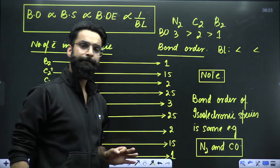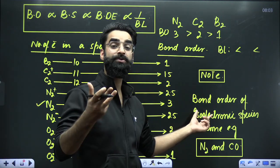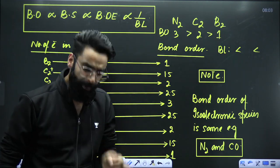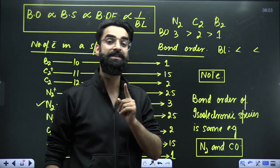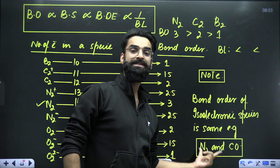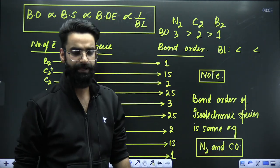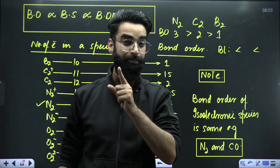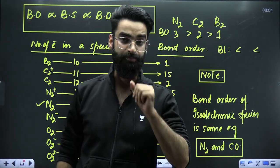One more important thing to remember: whenever you see isoelectronic species — which are species having the same number of electrons — they always have the same bond order. For example, N2 and CO are both 14-electron species, so both will have a bond order of 3. This is one quick hack through which you can solve bond order, bond strength, bond dissociation energy, and bond length questions in less than 10 seconds.